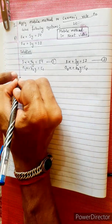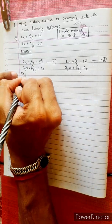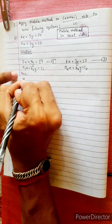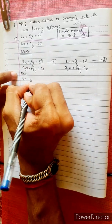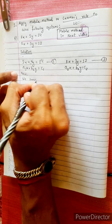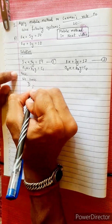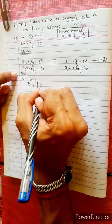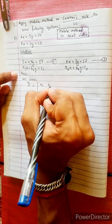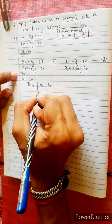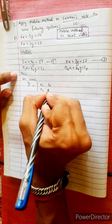Now we identify the a, b, c coefficient values. The main determinant D equals the matrix with entries a1, b1 in the first row and a2, b2 in the second row.